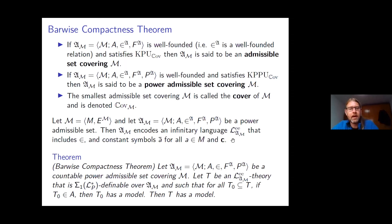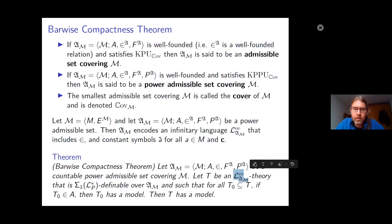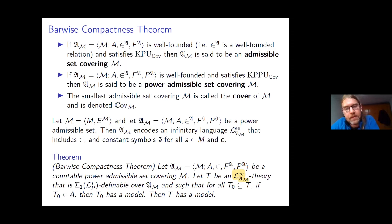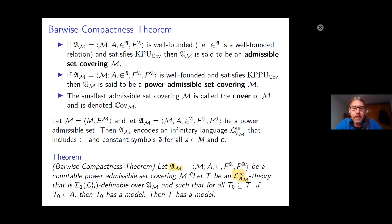The Barwise Compactness Theorem: if A is a countable power admissible set covering M, and T is a theory in this infinitary language coded in A that is Σ₁(L*P) definable over A, and every subset of T contained in A has a model, then T has a model. The question is: under what circumstances does the cover of an L-structure exist?